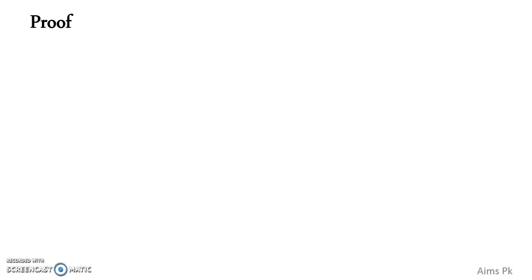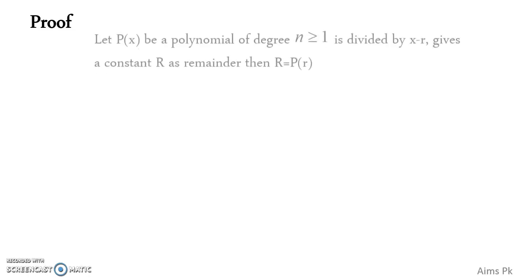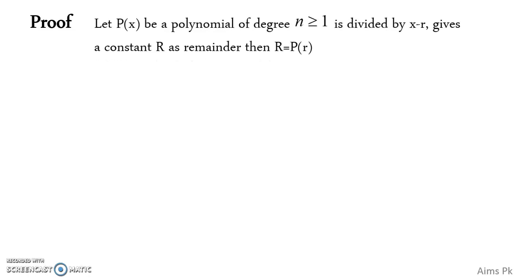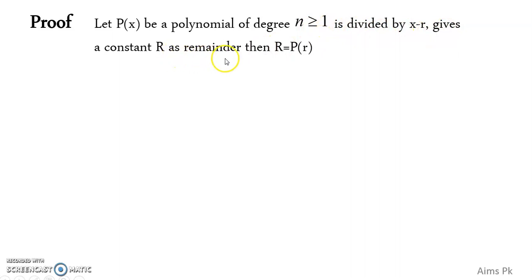Now, how does the Remainder Theorem save our time? Let's find out. But before applying it to a question, let's discuss its proof. Let P(x) be a polynomial of degree n greater than or equal to 1, divided by (x minus r), which gives a constant R as remainder, then R equals P(r). This is the statement.